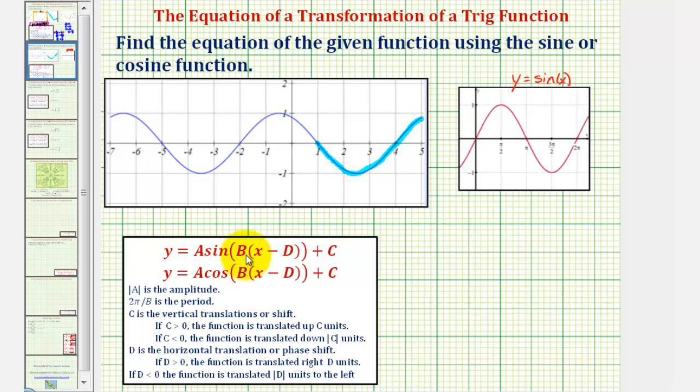So let's begin by determining the values of a, b, c, and d. We'll notice how here the midline is the x-axis, which means there is no vertical shift, and therefore c equals zero.